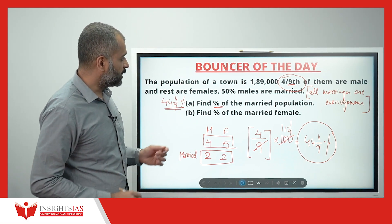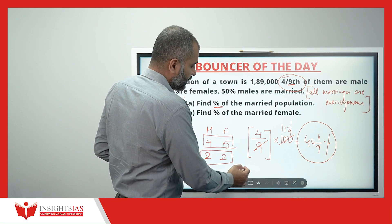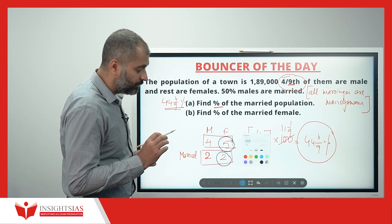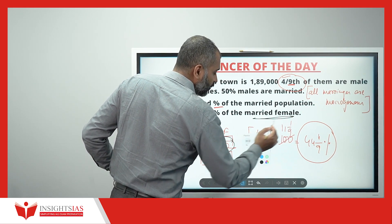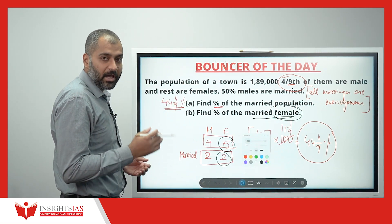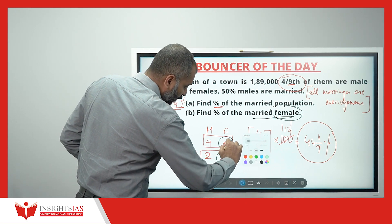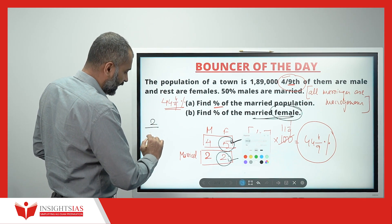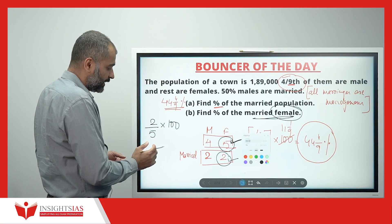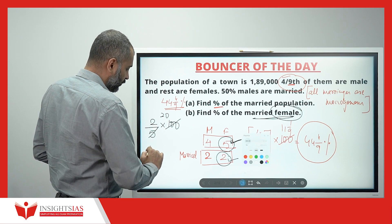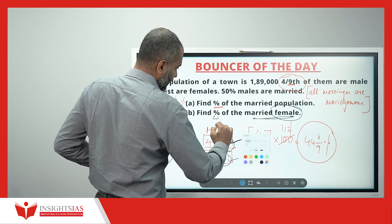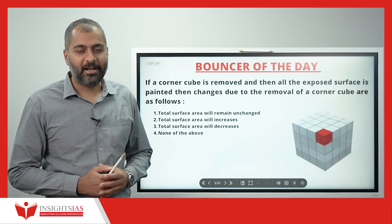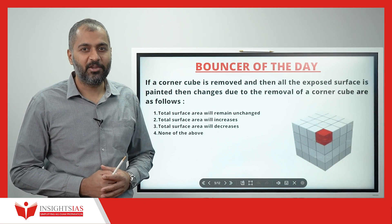Now find the percentage of married females. There are 5 females total, and 2 are married. Among females only, 2 out of 5 are married. For every 100, that is 40 percent. So 40% of females are married. That's the bouncer of the day — try to solve it and put your answers in the comments. Thank you, keep watching!